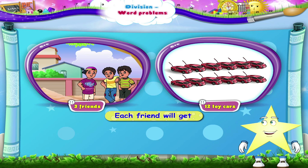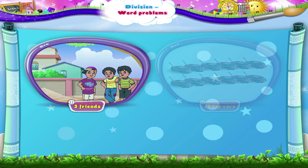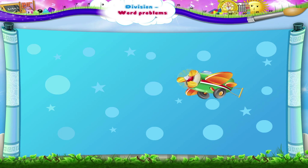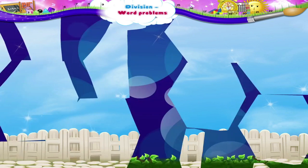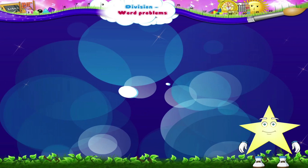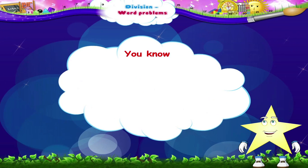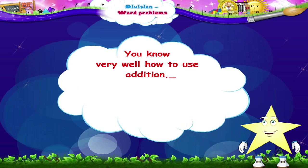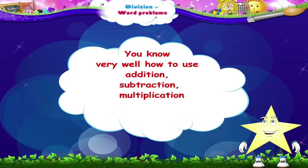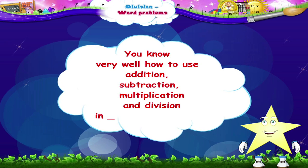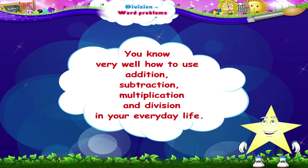Each friend will get 12 divided by 3, that is 4 toy cars. So Starry, now you know very well how to use addition, subtraction, multiplication and division in your everyday life.